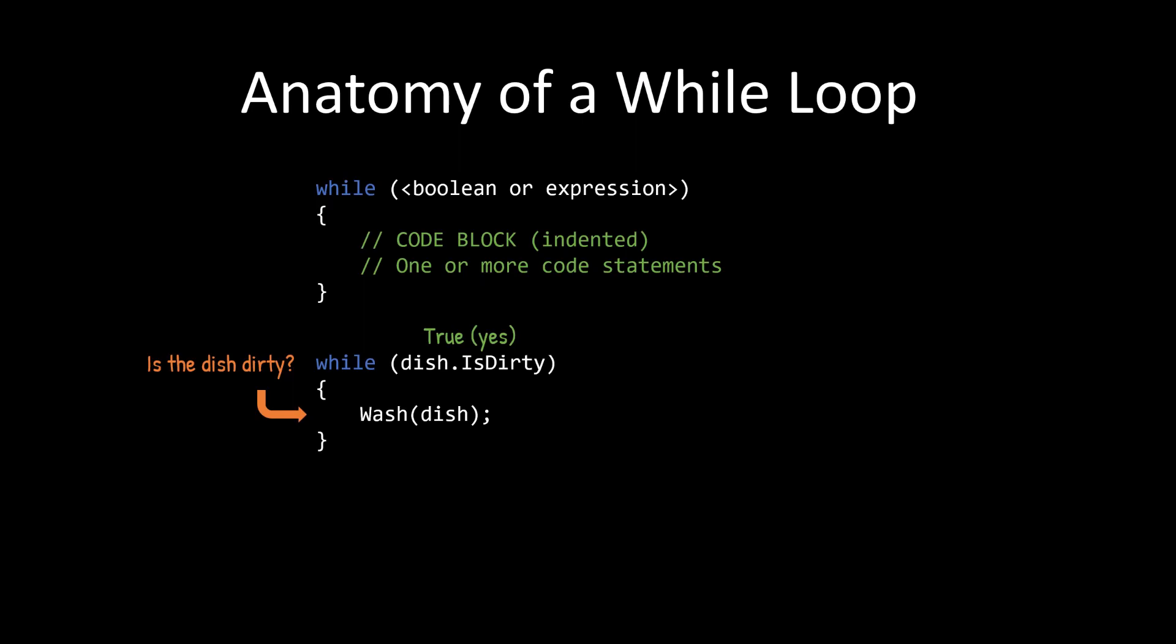And then it's going to go back up when it hits the bottom of the curly braces at the loop, and it's going to say, is the dish still dirty? And it's going to check. And if it's true, it's going to repeat the code block. And it's going to wash the dish until the dish is dirty returns false.